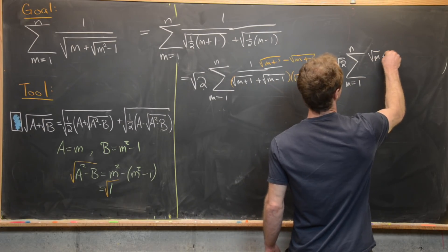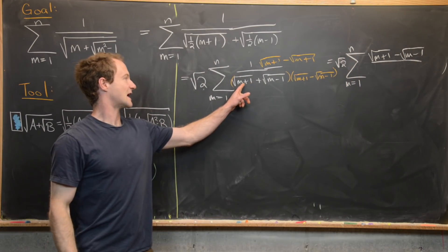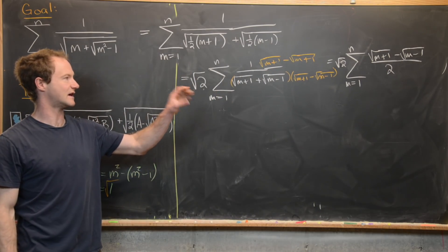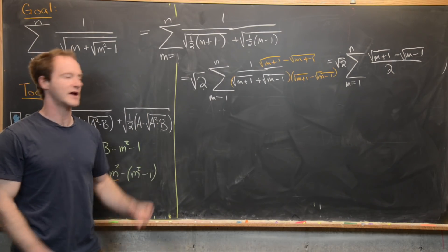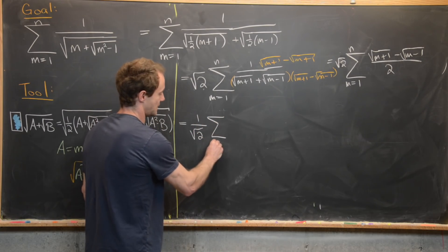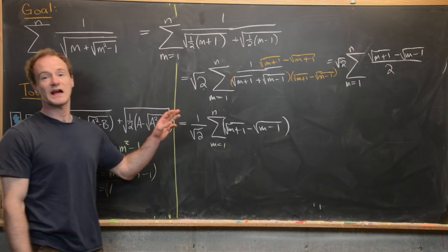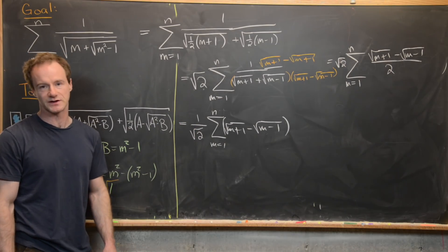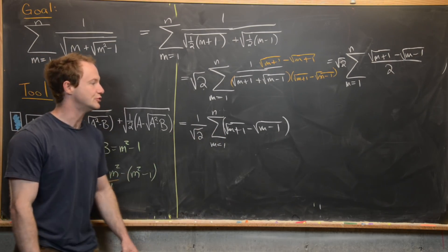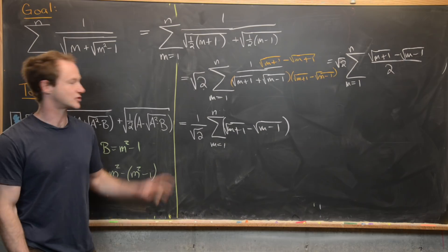So we have the square root of 2 in front of the sum m equals 1 to n of radical m plus 1 minus radical m minus 1, all over 2. Taking the 2 out of the denominator and canceling with the root 2 in the numerator gives one over root 2 times the sum from m equals 1 to n of radical m plus 1 minus radical m minus 1. You can see that this is going to be a telescoping series. Instead of listing terms and arguing which cancel, I'll break it into two sums and re-index them.